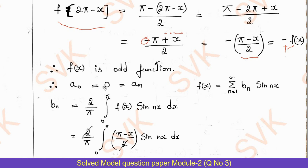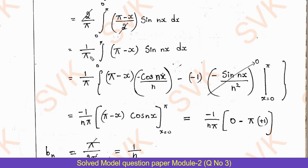As the given function is odd, we define a₀ and aₙ as 0. For an even function, bₙ would be 0. Therefore we require the Fourier series as f(x) = Σ bₙ sin(nx), where bₙ = (2/π) ∫₀^π f(x) sin(nx) dx. Substituting f(x) = (π - x)/2 and cancelling 2/2, we get (1/π) ∫₀^π (π - x) sin(nx) dx.